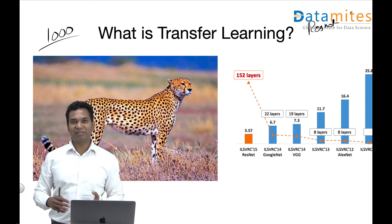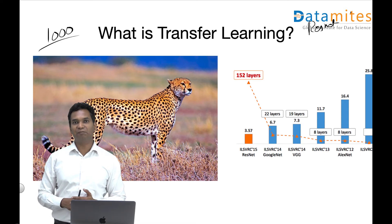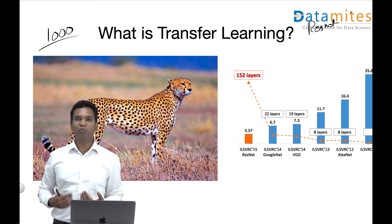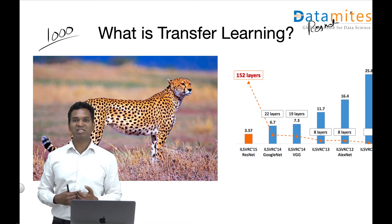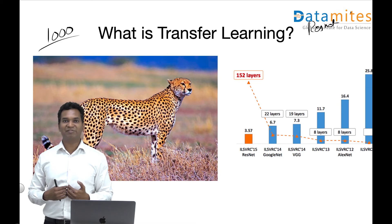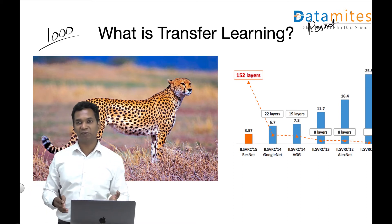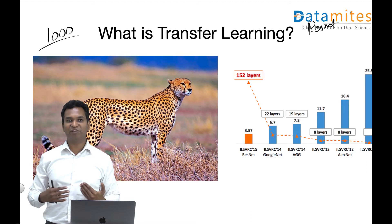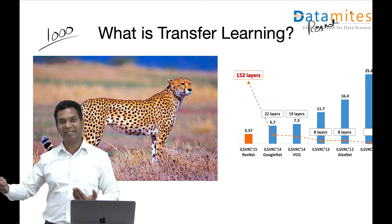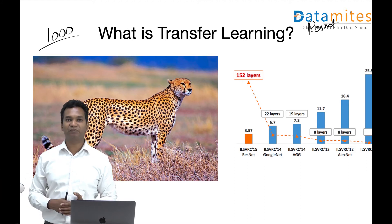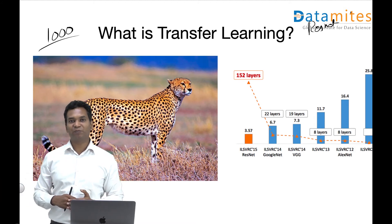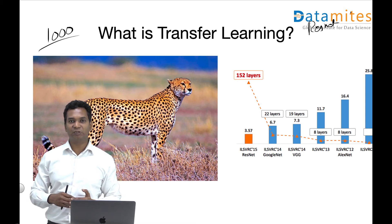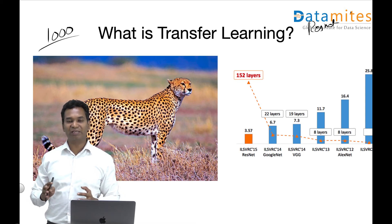Transfer learning is amazing because it's kind of getting near to how humans learn. Humans do transfer learning all the time. For example, you learn certain aspects and then generalize and use that knowledge for many other tasks as well.